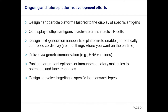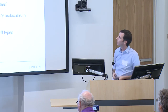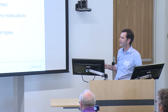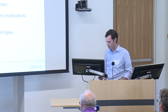We're designing new nanoparticle platforms specifically tailored to the display of particular antigens, and we've shown in several cases that you get more robust particles from that. We're co-displaying multiple antigens on the same particle to activate cross-reactive B cells — because of the in vitro assembly reaction, you can put nanoparticle subunits with different antigenic variants into the reaction and make particles co-displaying those. We're designing next-generation nanoparticle platforms with control over the placement of functional elements. We're working on delivering these via genetic immunization, including RNA vaccines. We're packaging T-help epitopes, immunomodulatory molecules, and adjuvants on the inside and outside of these particles, and also designing and evolving them to target specific locations or cell types.